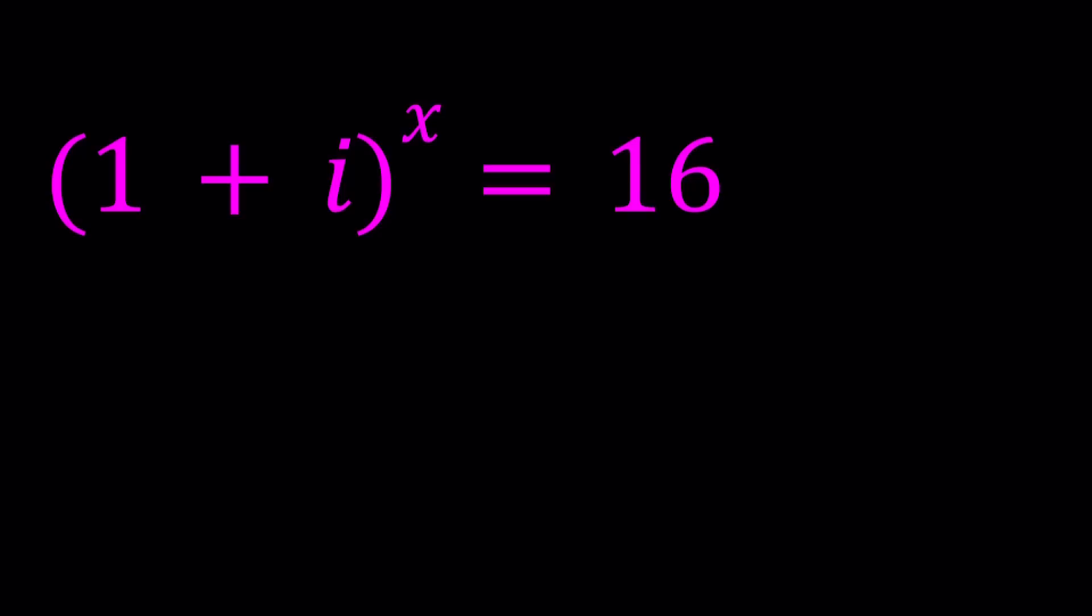So i is the number whose square equals negative 1. It's also known as one of the square roots of negative 1. The reason I say one of them is because every number has two square roots in the complex world. So the square root of negative 1 is either i or negative i.